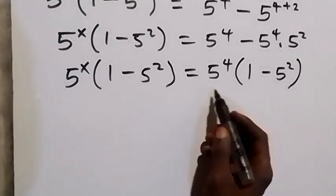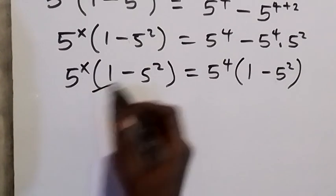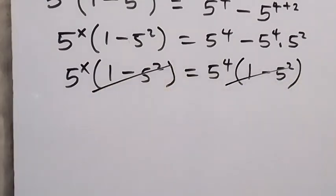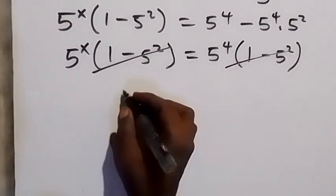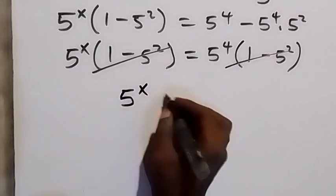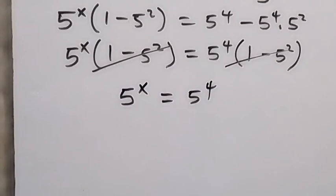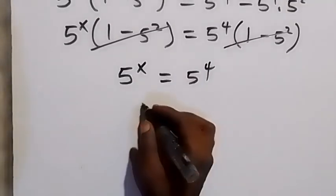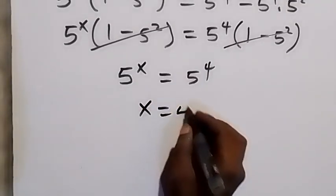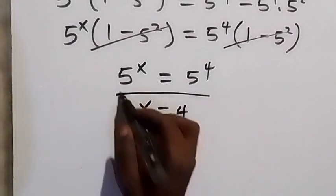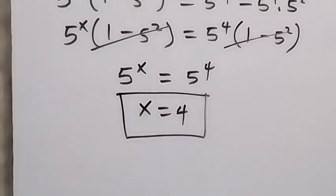We have 1 minus 5 squared on both sides, so when we divide, these cancel each other. Then we have 5 raised to power x equals 5 raised to power 4. Since the bases are equal, we can equate the powers and we have x equals 4. This is the value of x. We can also substitute the value of x to confirm if this solution satisfies the problem.